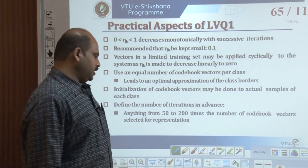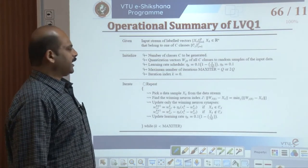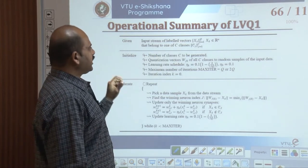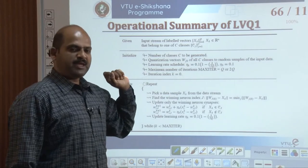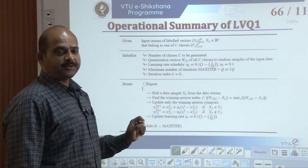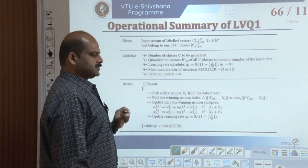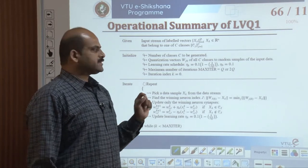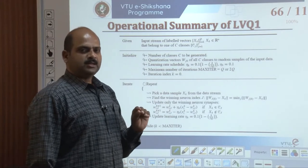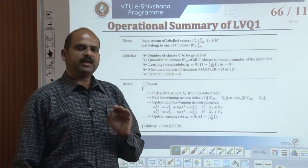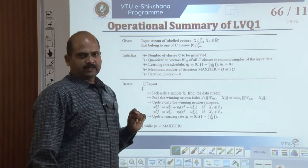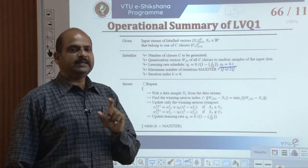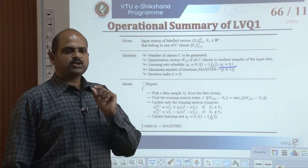Let us see the operational summary of Learning Vector Quantization 1. Given an input stream of labeled vectors belonging to one of the classes C, we need to initialize the number of classes and the quantization vectors wj for all classes as random samples of the input data. The learning rate is scheduled per formula with an initial value of 0.1.